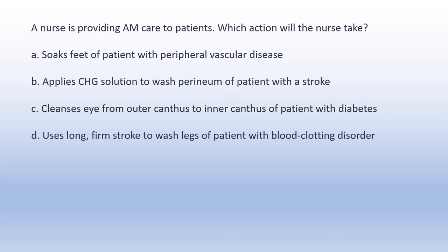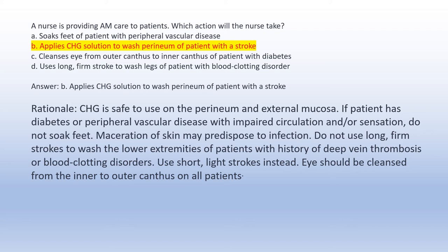A nurse is providing AM care to patients. Which action will the nurse take? A. Soak feet of patient with peripheral vascular disease. B. Apply CHG solution to wash perineum of patient with a stroke. C. Cleanse eye from outer canthus to inner canthus of patient with diabetes. D. Use a long firm stroke to wash legs of patient with blood clotting disorder. Answer B: Apply CHG solution to wash perineum. Rationale: CHG is safe to use on the perineum and external mucosa. Do not soak feet if patient has diabetes or peripheral vascular disease. Do not use long firm strokes on lower extremities of patients with history of deep vein thrombosis; use short light strokes instead. Eyes should be cleansed from inner to outer canthus.